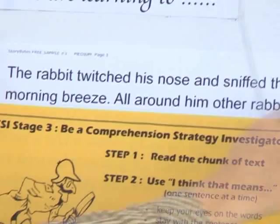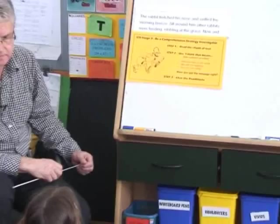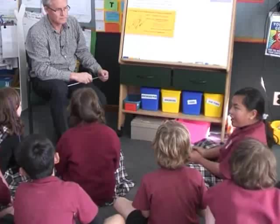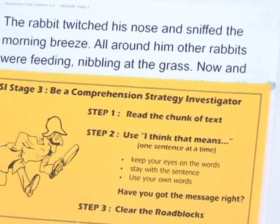Second sentence — go. All around him other rabbits were feeding, nibbling at the grass. I think that means that all the other ones — they were just having breakfast.